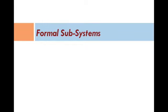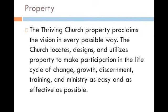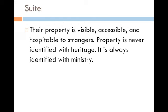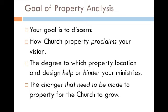Now let's look at formal subsystems. The thriving church property proclaims the vision in every possible way. The church locates, designs, and utilizes property to make participation in the life cycle of change, growth, discernment, training, and ministry as easy and as effective as possible. Their property is visible, accessible, and hospitable to strangers. Property is never identified with heritage but with ministry. The goal of property analysis is to discern how church property proclaims the vision, the degree to which property location and design helps or hinders your ministries, and the changes that need to be made to property for the church to grow.